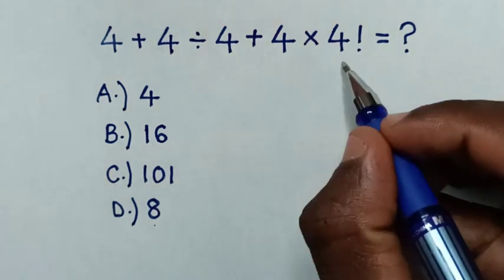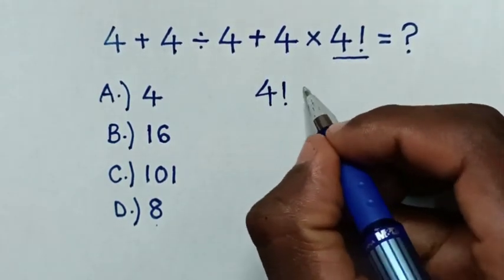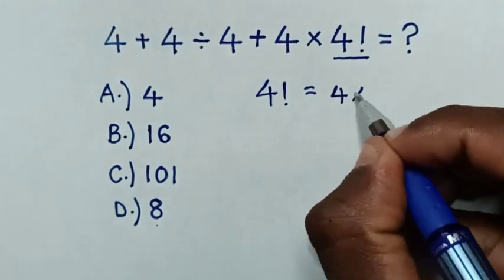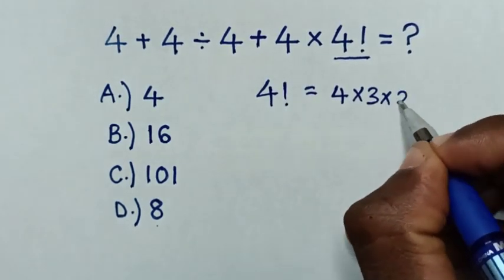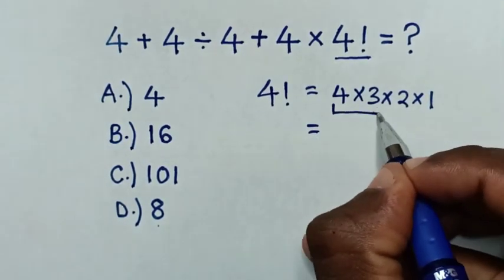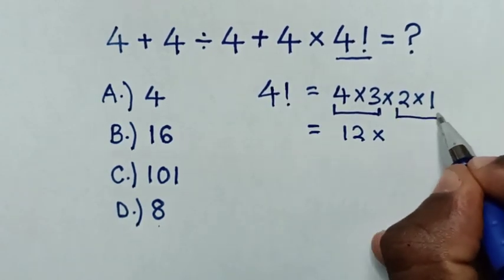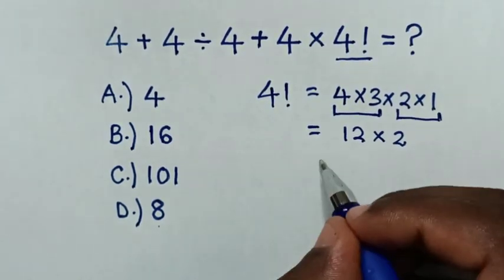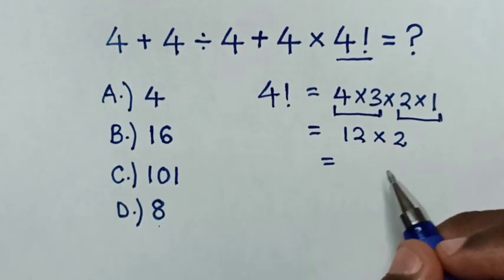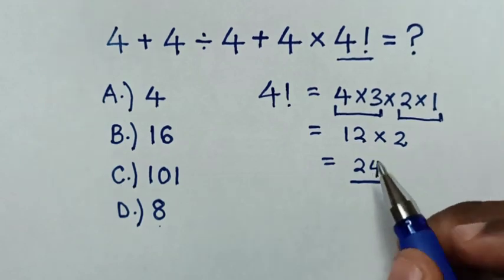So, from this problem, we start to solve 4 factorial, which is equal to 4 times 3 times 2 times 1. Then it will be equal to 4 times 3 is 12, then times 2 times 1 is 2. Then it will be equal to 12 times 2 is 24. So this is the value for 4 factorial.